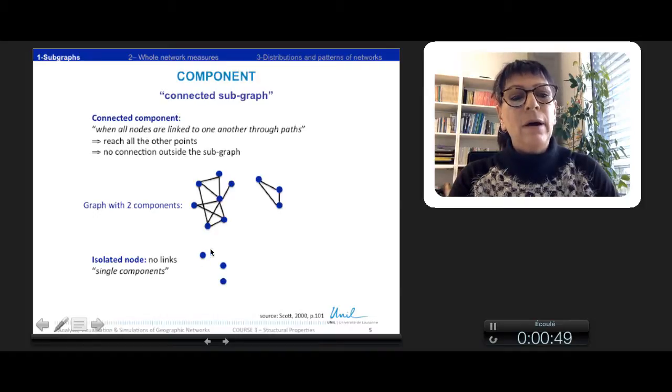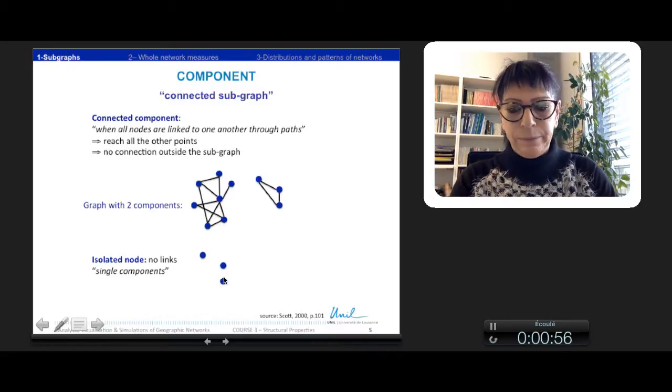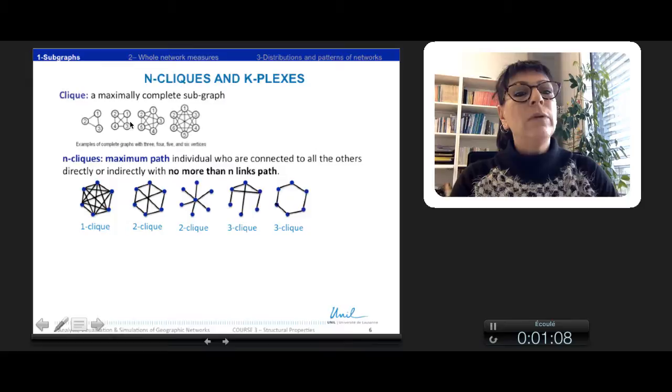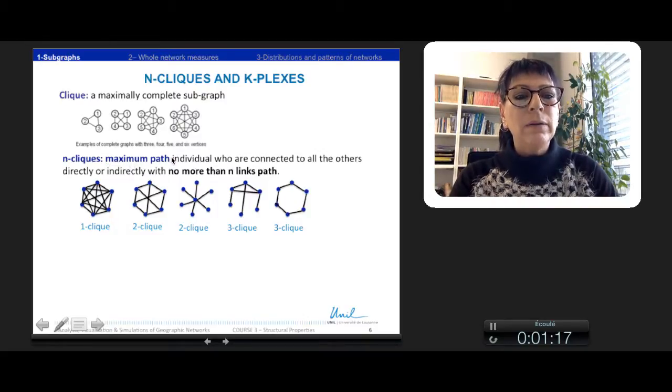And here, there are isolated nodes, which we can consider as single components. Beside, we can define a clique, which is a maximally complex subgraph. Every node is linked to the other one directly. The N-Clicks relax these conditions.